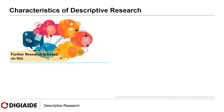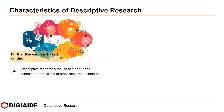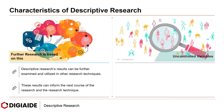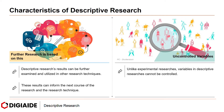Further research is based on this. Descriptive research results can be further examined and utilized in other research techniques. These results can inform the next course of the research and the research technique. And finally, uncontrolled variables: unlike experimental researches, variables in descriptive researches cannot be controlled.